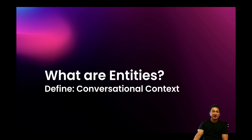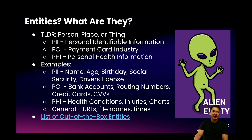So let's talk about entities. What are they, and more importantly, why do we care about them? The too-long-didn't-read explanation of an entity is typically a person, place, or thing. The most common use case for entity detection is privacy and redaction purposes. These are things like personal identifiable information, payment credit card industry-related items, or personal health information.